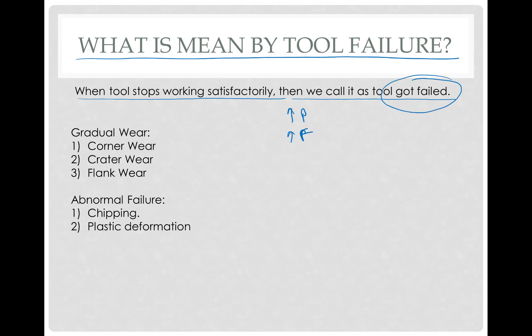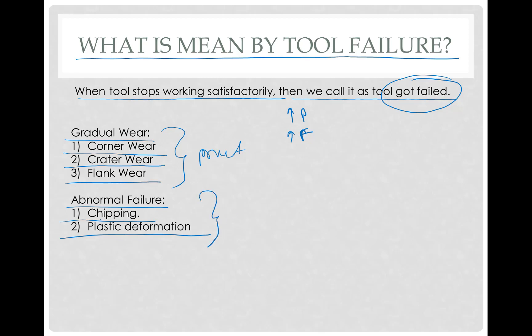There are two reasons for tool failure. One is gradual wear and another is abnormal failure of the tool. Gradual wear includes corner wear, crater wear, and flank wear. Abnormal failure includes chipping and plastic deformation of the tool. We will study gradual wear in detail because we can predict it, whereas abnormal failures cannot be predicted, so there is less importance in studying them in detail.